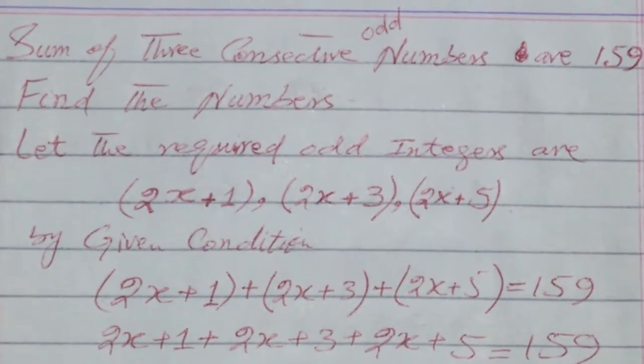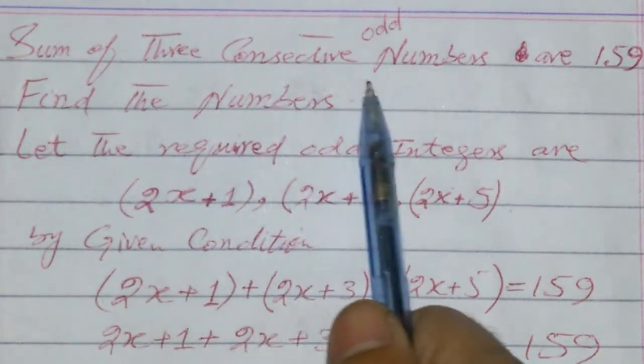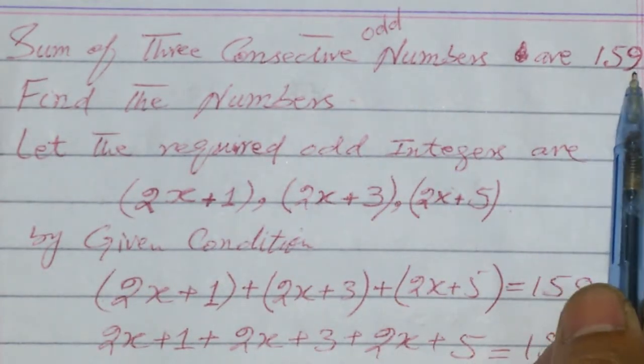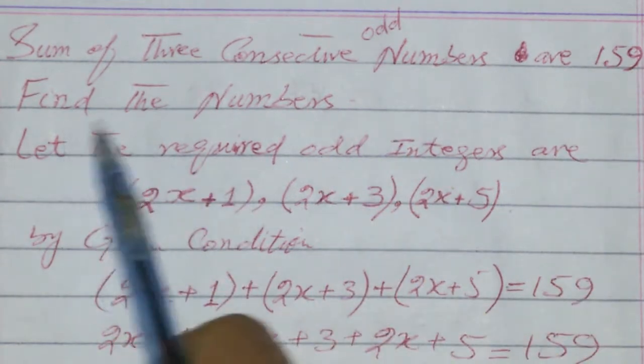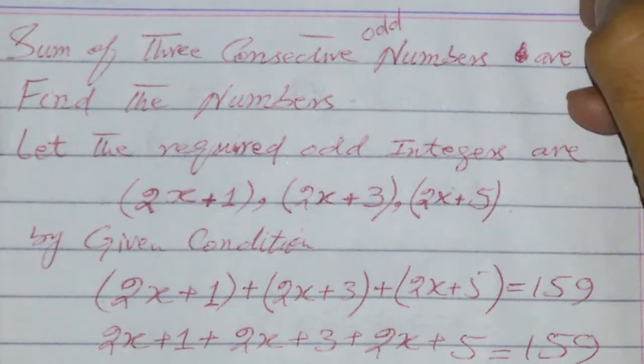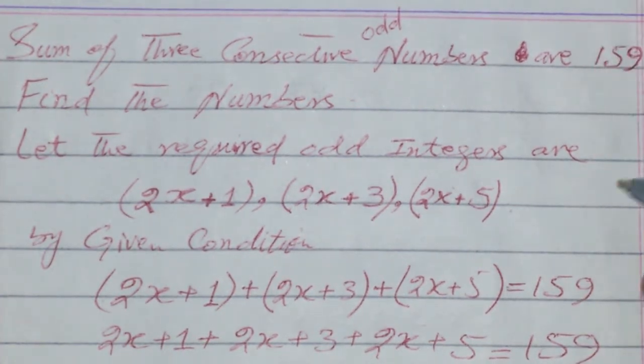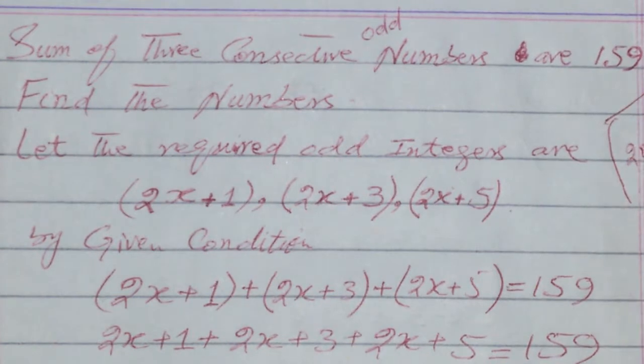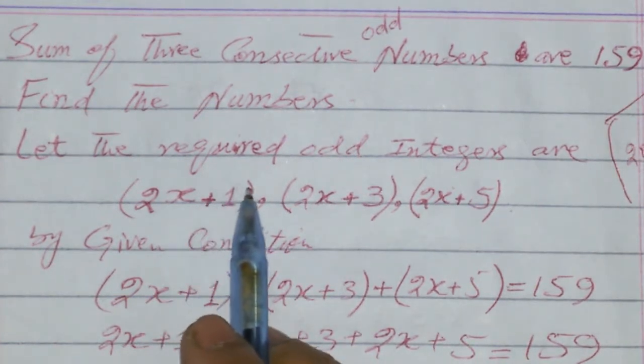Next question: The sum of three consecutive odd numbers is 159. Find the numbers. We need to represent odd numbers in their generalized form. For any odd integer, the form is 2n+1, where n belongs to the set of integers.